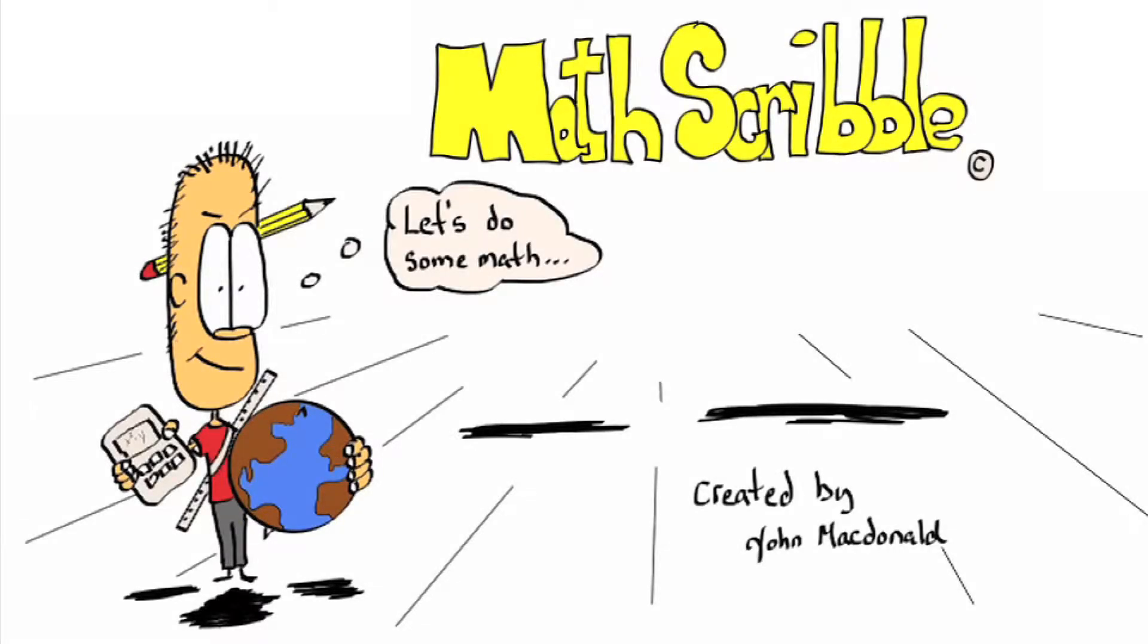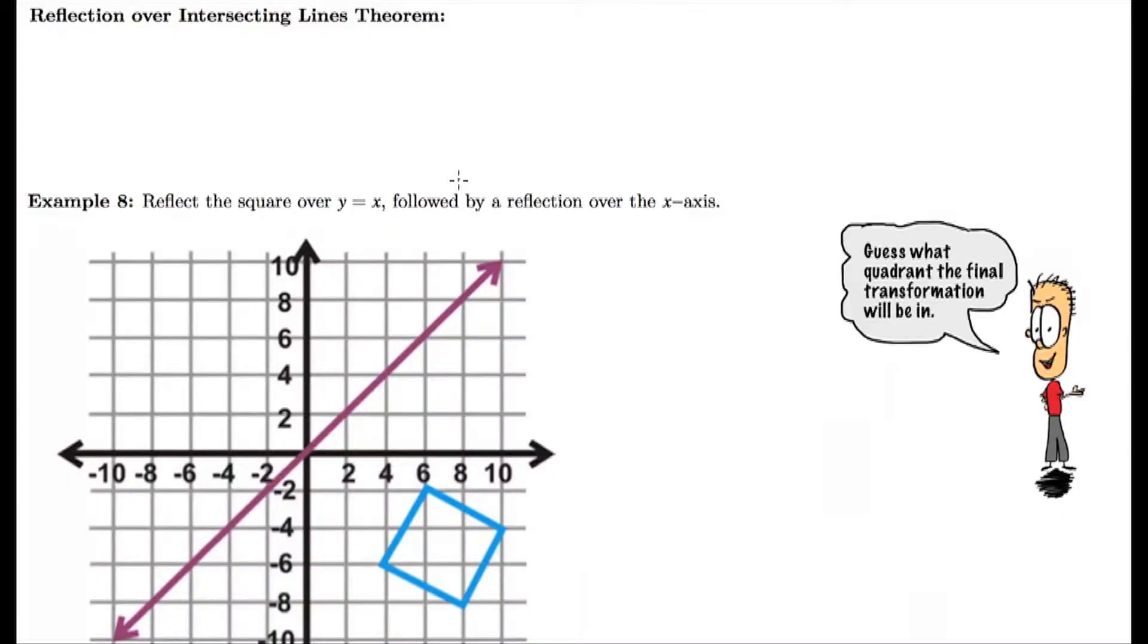Okay, so this is part three on 10.5 compositions. In part two, we finished up with a construction where we did two reflections and it ended up being a rotation.